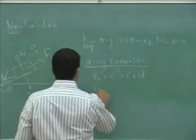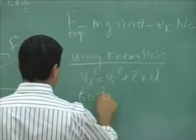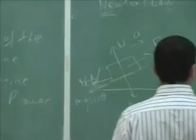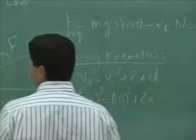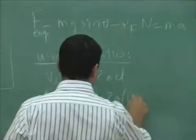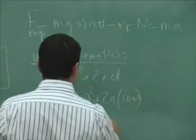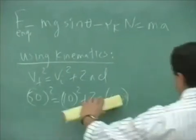V final squared, well, this one is given to you, 50. The V initial is given to you is 10. And the distance is given to you, the distance along the incline is 1000 feet. And that's enough info to now solve for the acceleration.